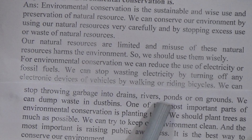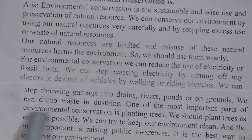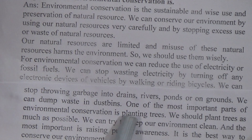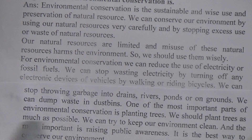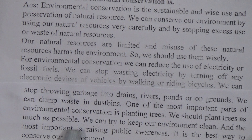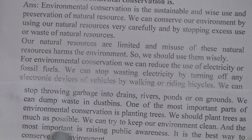We can stop wasting electricity by turning off electronic devices, and use big vehicles less by walking or riding a bicycle. We can stop throwing garbage into drains, rivers, ponds, or on the ground — we should dump waste in dustbins. One of the most important parts of environmental conservation is planting trees — we should plant trees as much as possible. We can try to keep our environment clean, and most importantly, raising public awareness is the best way to conserve our environment.